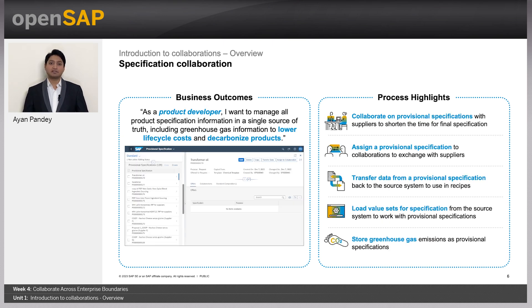Following is the specification collaboration. As the business outcome states, as a product developer, I want to manage all product specification information in a single source of truth, including the greenhouse gas information, to lower lifecycle cost and decarbonize products. The process highlights are collaborating on provisional specifications with suppliers to shorten the time for final specification, assigning a provisional spec to a collaboration to exchange with suppliers, transferring data from a provisional specification back to the source system to use in recipes, loading value sets for specifications from the source system to work with provisional specifications, and storing greenhouse gas emissions as provisional specifications.